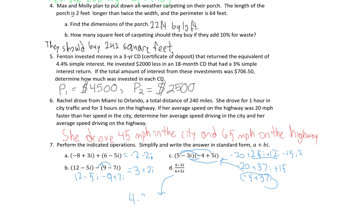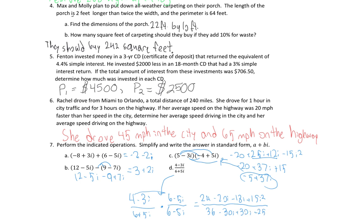For part D we have 4 minus 3i over 6 plus 5i. To simplify, we multiply the top and bottom by the complex conjugate of the denominator — that means switching the sign on the imaginary part, giving us 6 minus 5i. On top we FOIL: first is 24, outer is minus 20i, inner is minus 18i, last is plus 15i squared. On the bottom: 36, and the outer and inner terms cancel (minus 30i and plus 30i), leaving 36 minus 25i squared.